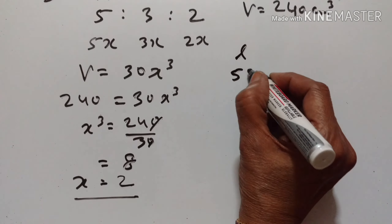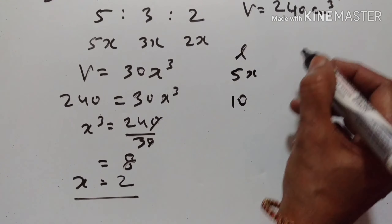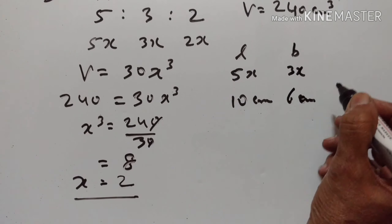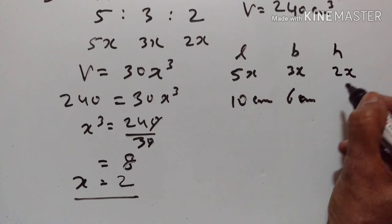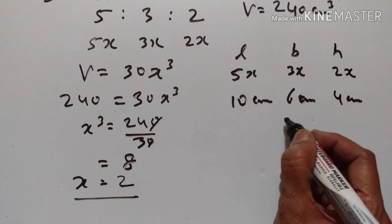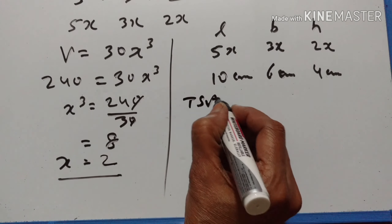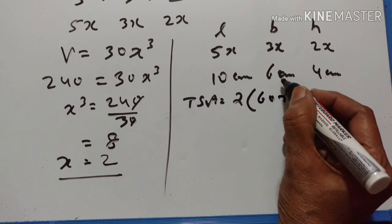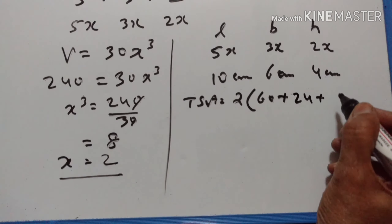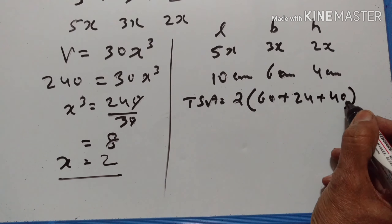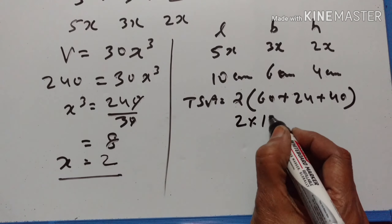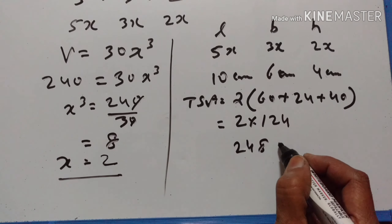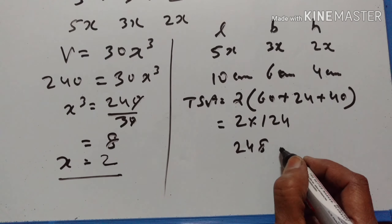Now the dimensions: length = 5x = 10 cm, breadth = 3x = 6 cm, height = 2x = 4 cm. Total surface area = 2(lb + bh + hl) = 2(60 + 24 + 40) = 2 × 124 = 248 cm².